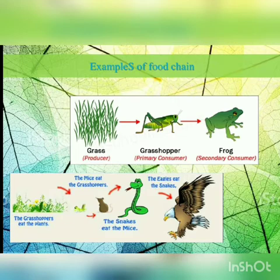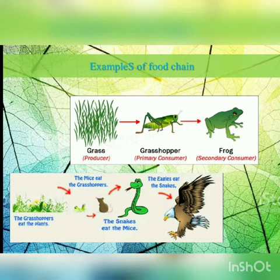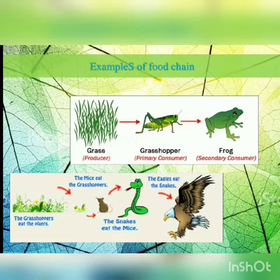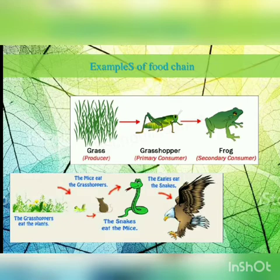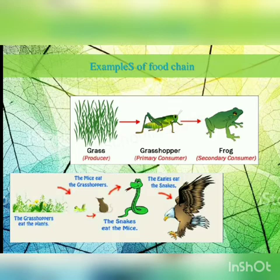Now we will see examples of a food chain. The first example is: grass → grasshopper → frog. Grass is eaten by the grasshopper, and the grasshopper is eaten by the frog. This feeding relationship is represented by red arrows. In this food chain, grass is the producer, grasshopper is the primary consumer, and frog is the secondary consumer.